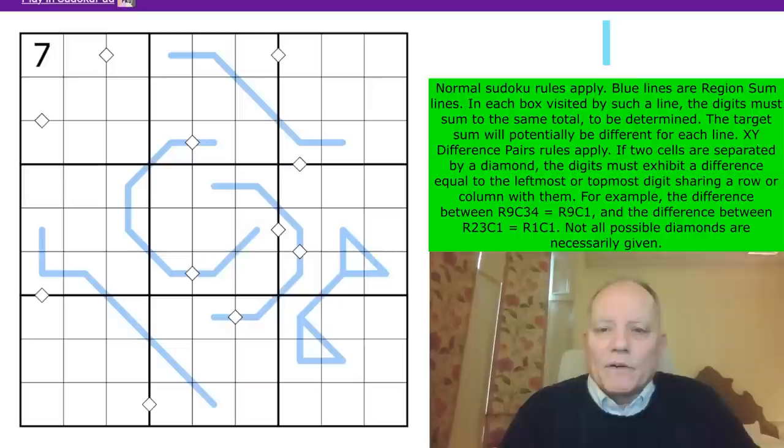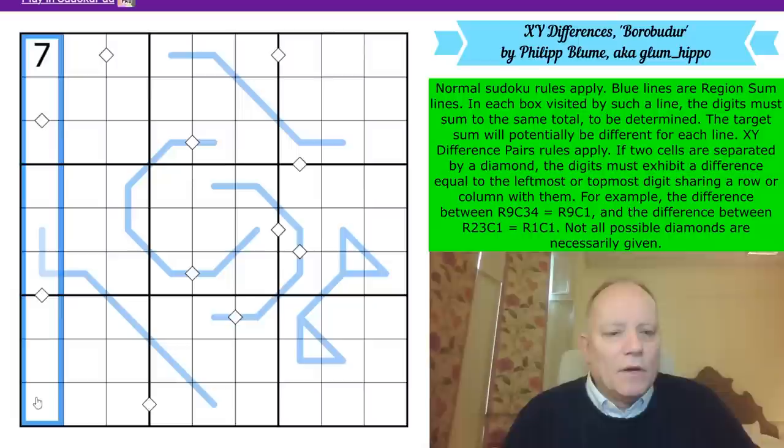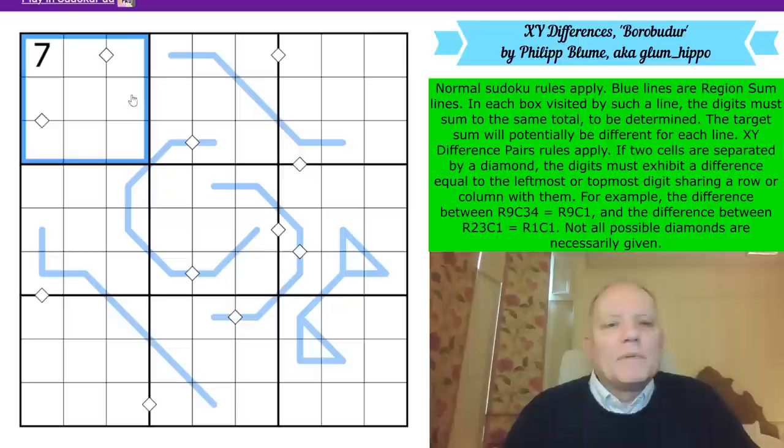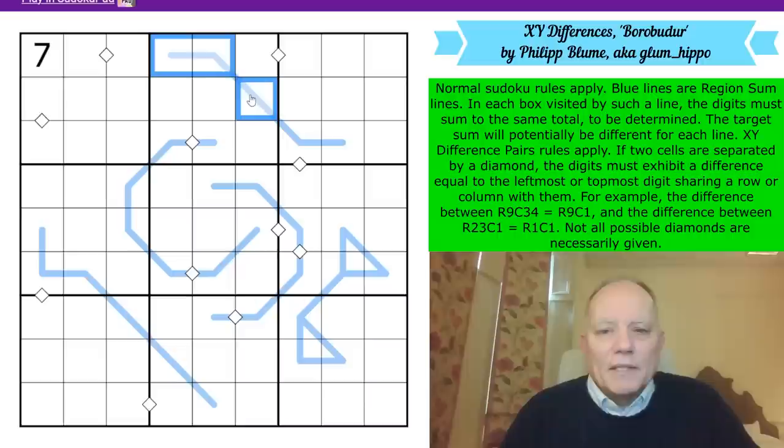Let's have a look at the rules. Normal Sudoku rules apply - we have to put one to nine in every row, column and three by three box. And in all of those areas, Philip has provided the seven already. Generous. Blue lines are region sum lines. In each box visited by such a line, the digits must sum to the same total, which is to be determined. The target sum will potentially be different for each line.